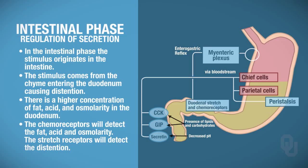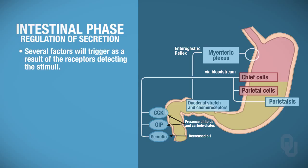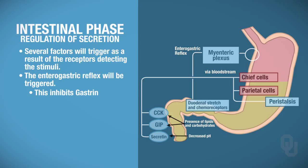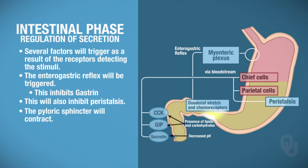Once these receptors detect those stimuli, that's going to trigger quite a number of things. One of these is called an enterogastric reflex. What's going to happen is this is going to inhibit gastrin — because anytime there's a high concentration of acid, it's going to inhibit gastrin. We're going to stop the mixing and inhibit peristalsis.